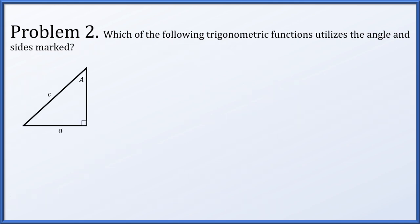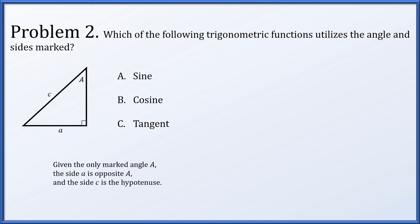In problem 2, which of the following trigonometric functions uses the angle and sides marked? Is it sine, cosine, or tangent? So A is the only marked angle, little a is opposite that angle, and c is the hypotenuse. So sine is opposite over hypotenuse, cosine is adjacent over hypotenuse, and tangent is opposite over adjacent. Which of these uses the opposite side and the hypotenuse? It's sine.